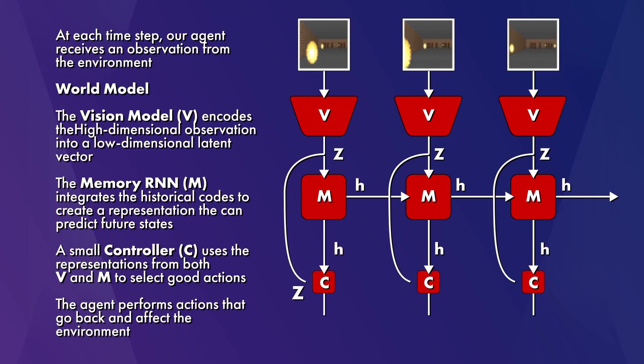At each time step, the agent receives an observation from the environment. In the case of the racing game, it was game frames. The vision model was responsible for encoding the observation into a lower dimensional representation, a more compact version. Then they took this representation and fed it into the memory model, which used the learned representation to learn how the world tends to behave and make predictions on the next state of the world. It essentially learns a model of the world.